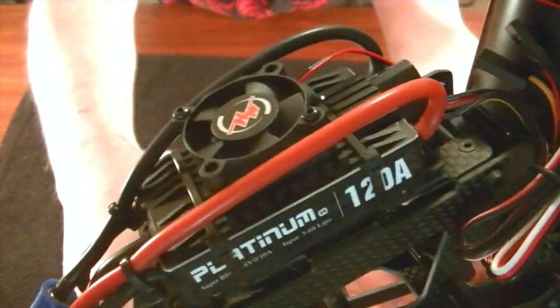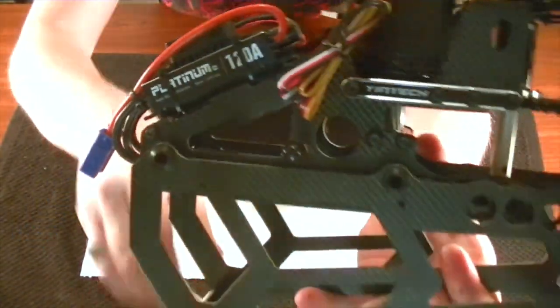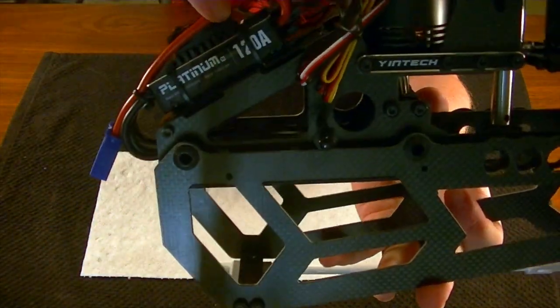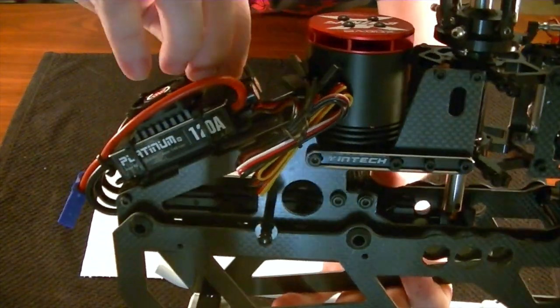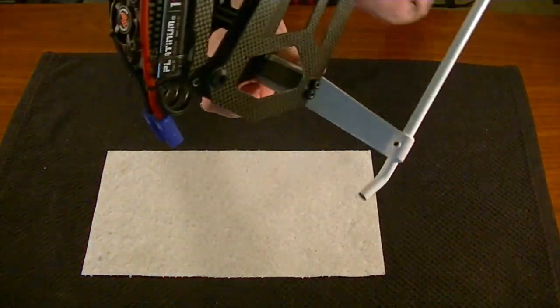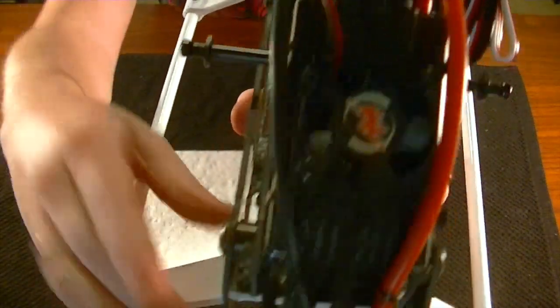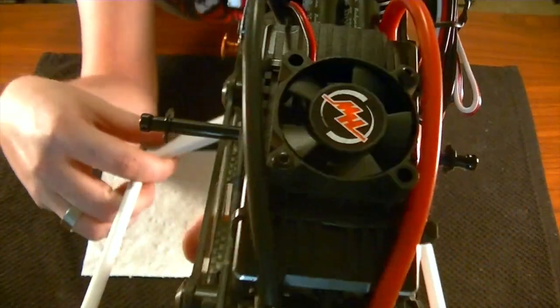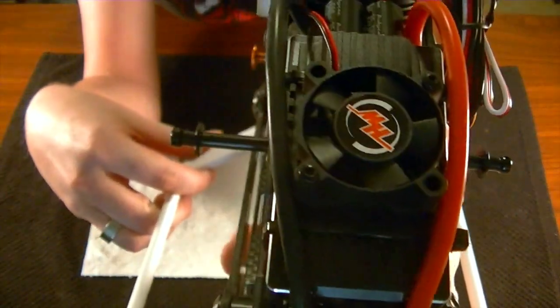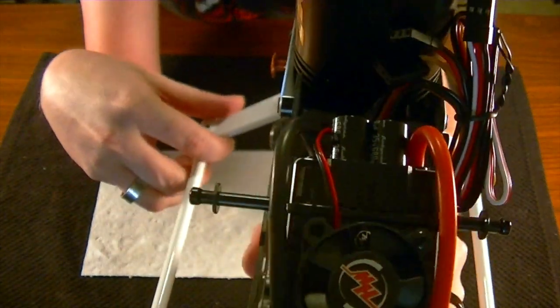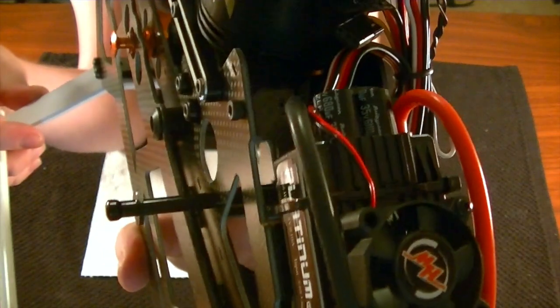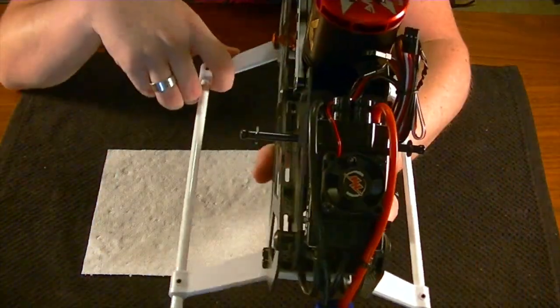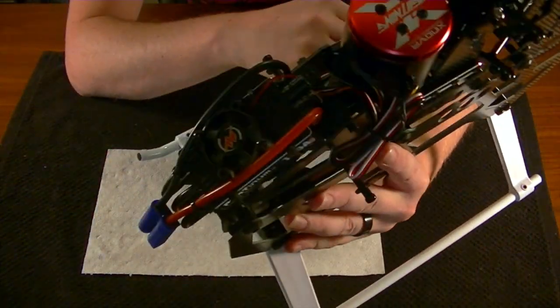For this side here, again, same thing. And then the nice thing is too if you're using the Hobbywing ESC and you want to use the little fan, the way I did mine is I mounted it in this orientation. And then the fan wire just runs right up, drops right behind the capacitors. Let me get the lighting right here - drops right behind the capacitors and you really can't see it, it's not an eyesore, so I think it looks really good.